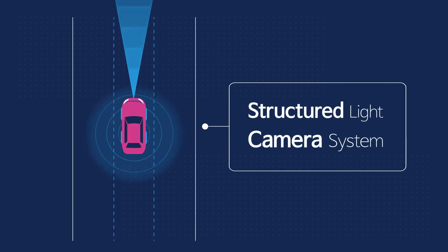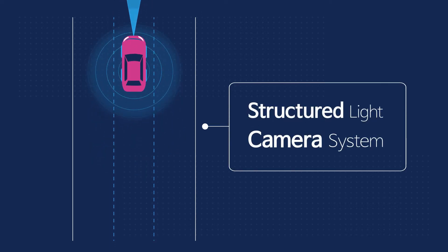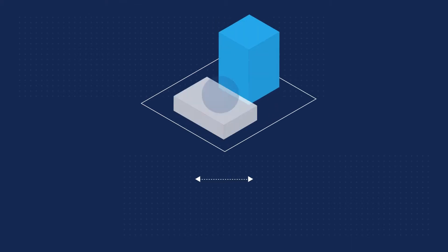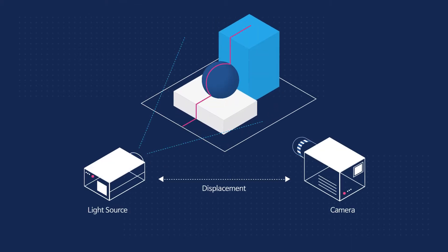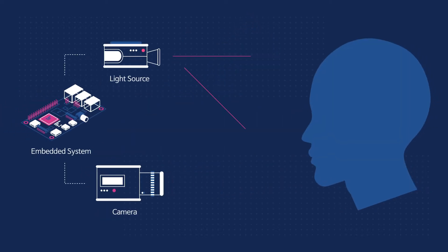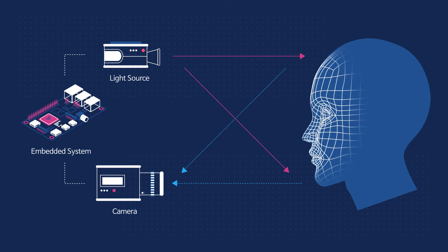Structured Light Camera Systems use developed embedded systems to create an object's patterns in real-time while synced together with an image projection system, so as to differentiate images into structured light-based 3D images.